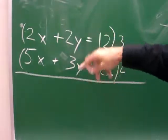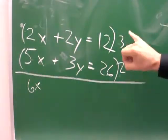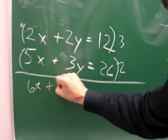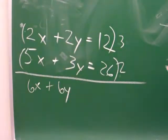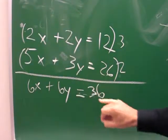Okay? Because we're aiming to get rid of these. 3 times 2x is 6x. 3 times 2y is 6y. 3 times 12 is 36. Okay?